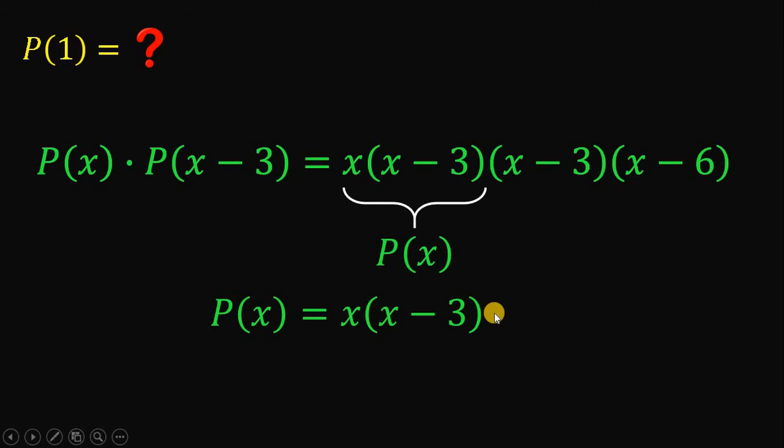Then the next question in our mind is what is the value of P(x minus 3)? So we need to replace all x with x minus 3. So this becomes x minus 3 and this x becomes x minus 3. So we have x minus 3 multiplied by x minus 3 minus 3.